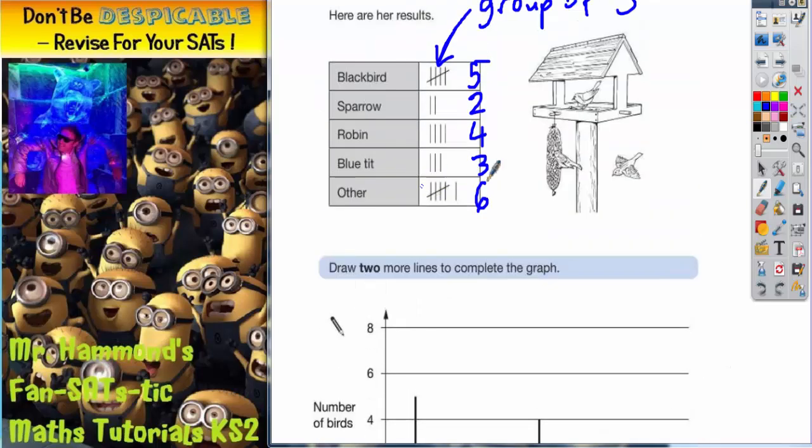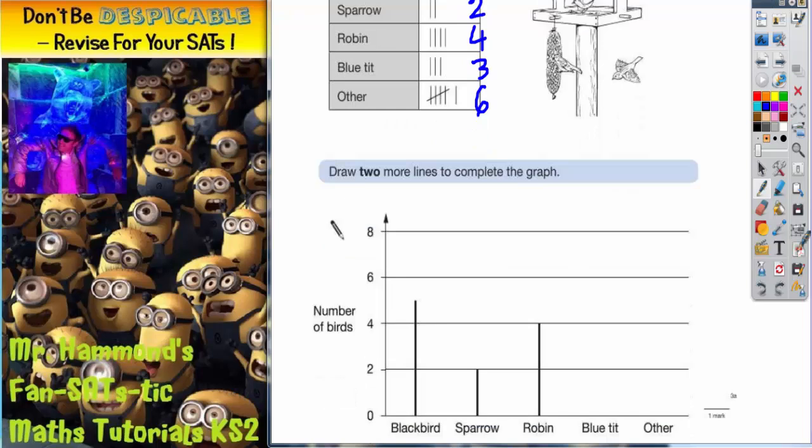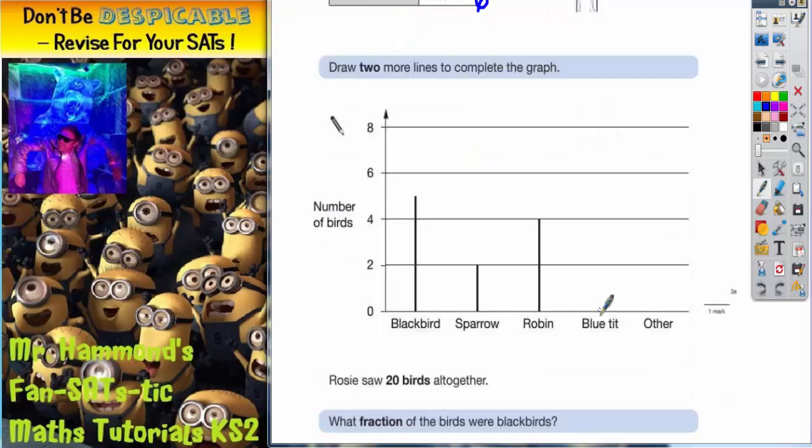Let's take a look at blue tit first. This is three. So we need a line going up to three. Now up the side of the scale it goes 0, 2, 4, 6, 8.